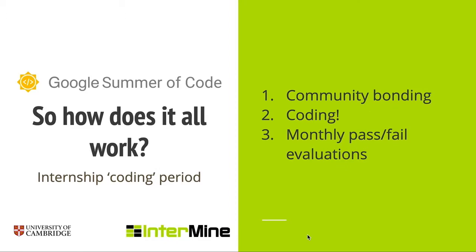There are a few weeks between when accepted interns are announced and when they start coding, known as the community bonding period. Interns spend time getting to know their mentors and setting up their environments, but aren't expected to code. Then once the coding period starts — about 12 weeks — there are monthly evaluations where interns pass feedback to mentors and mentors pass feedback to interns. Interns are paid after each successful evaluation.